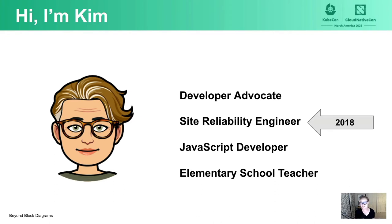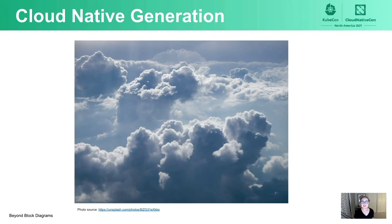I started that job in 2018, working at a company called Fairwinds, which is a Kubernetes consulting agency. My first experiences as a system administrator and ops person were as a Kubernetes administrator, which was really, really tough. There are a lot of people like me who start in the tech industry and are already working immediately in the cloud. I refer to these people as the cloud native generation — anyone who starts their career by writing software and deploying it into the cloud. It can be really difficult as someone in the cloud native generation to fully understand the systems we're working with, because it's very hard to build mental models of things you can't see and touch.